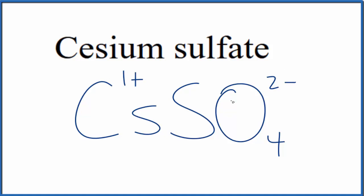So for the charge to balance, to have a net charge of 0, we could put a 2 here as our subscript. 2 times 1+, that's 2+. That would balance out the 2- here. So this is the formula for cesium sulfate, Cs2SO4.